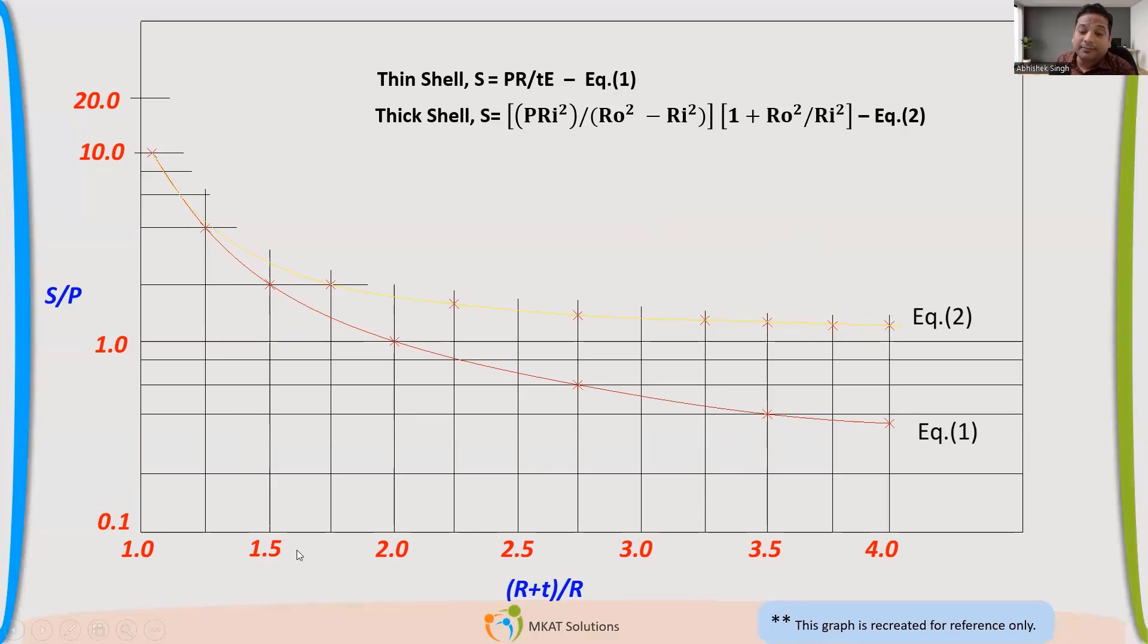And you see the difference in stresses getting generated because of these two different equations. So if you see, if the ratio (R+T)/R is less than 1.25, it is very closely matching. But beyond that, it is not giving us the accurate result. The problem is that the ratio S/P is lesser than equation 2. So it will not give conservative stress. It will give less stress. That is not conservative.